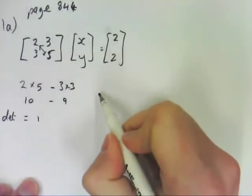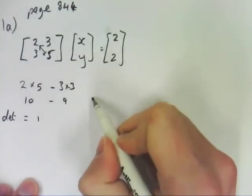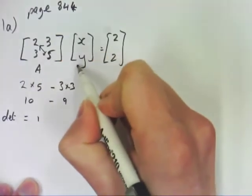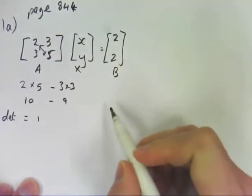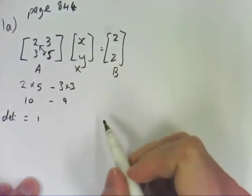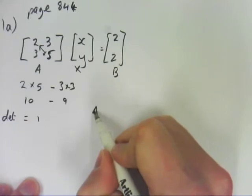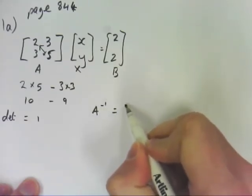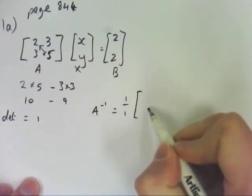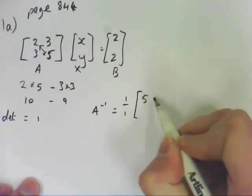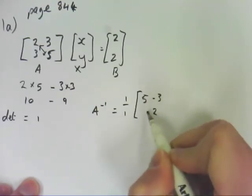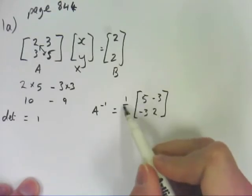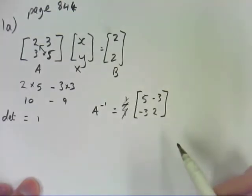The next step is, let's call this matrix A and this was X and this is B, just so we keep the same formula we've been using. So A to the minus 1 equals 1 over 1. We swap the mains, so 5, 2, and we change the sign of these. From now on we can forget about that. So that's our inverse.